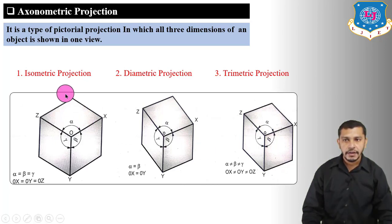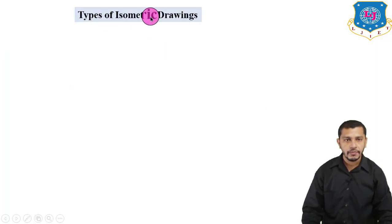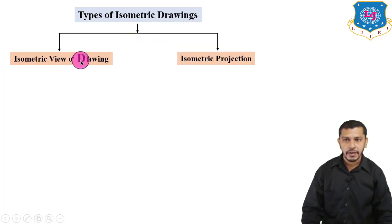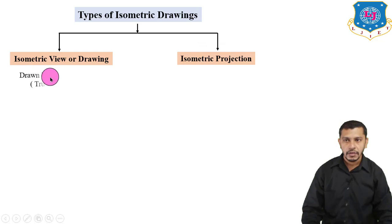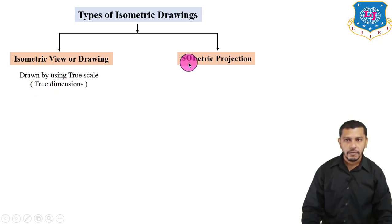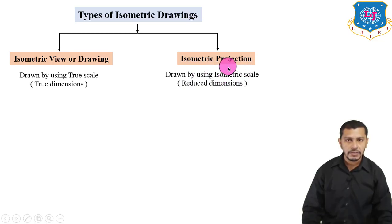Isometric drawings are done on isometric planes and are of two types: isometric view and isometric projection. Isometric view is drawn using a true scale — that means using the given dimensions. Whereas isometric projection is drawn using the isometric scale, and the isometric dimensions are reduced compared to the actual dimensions of the object.